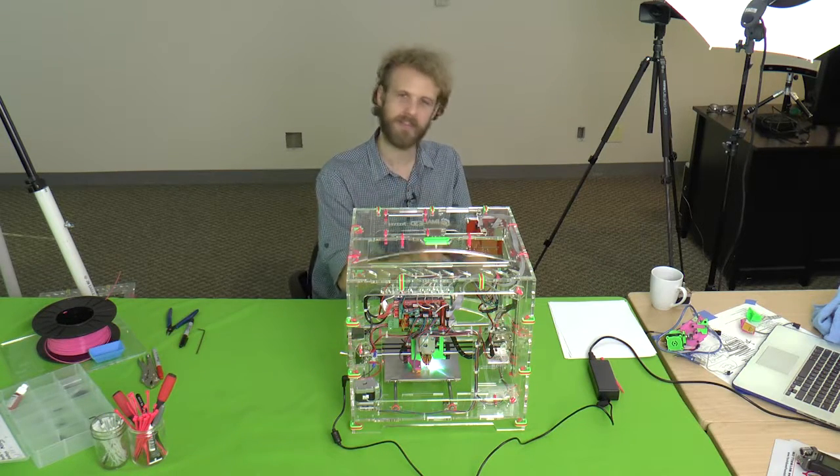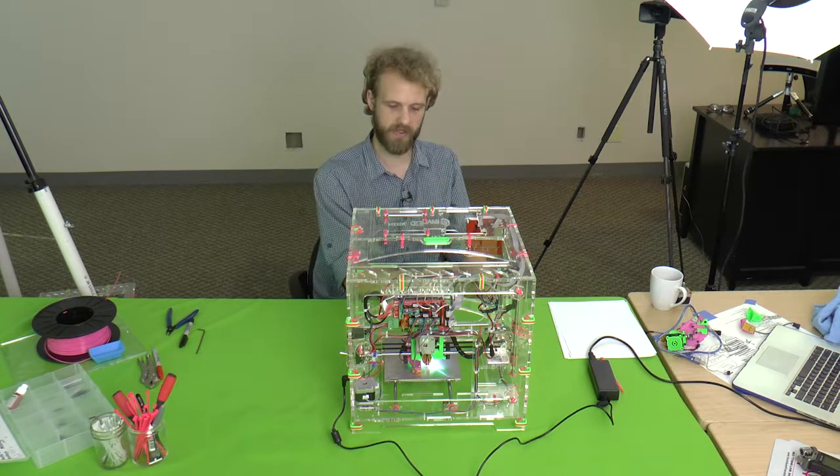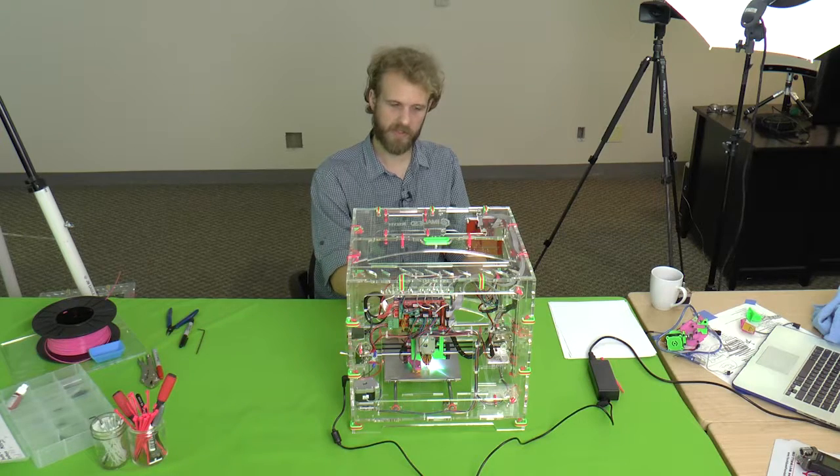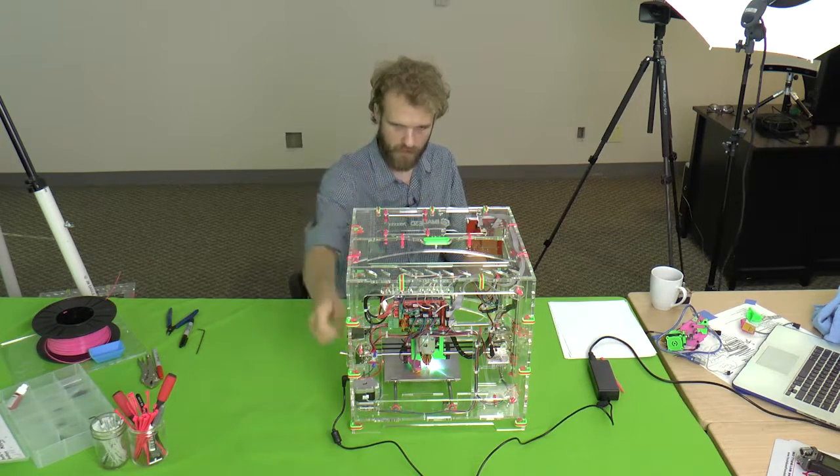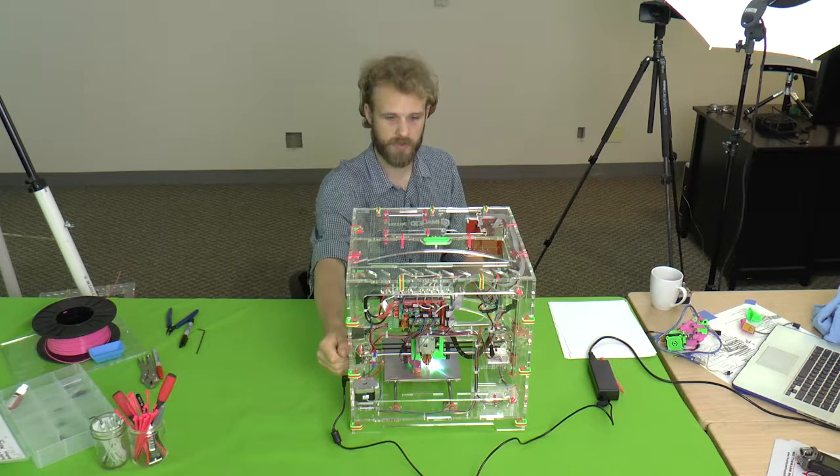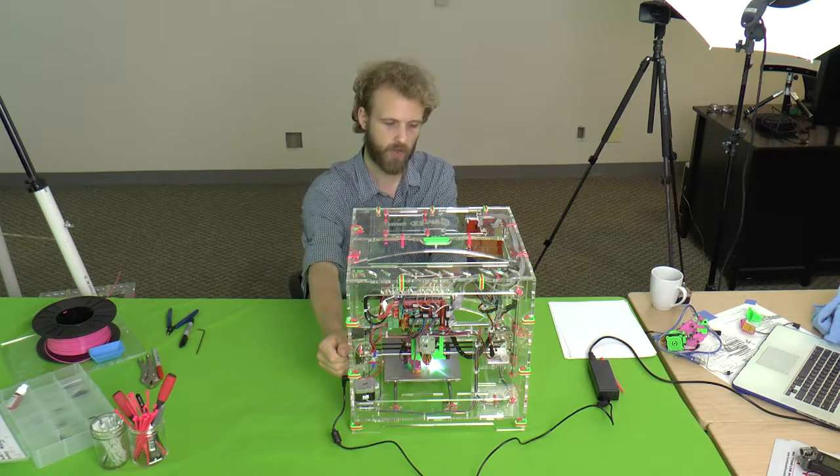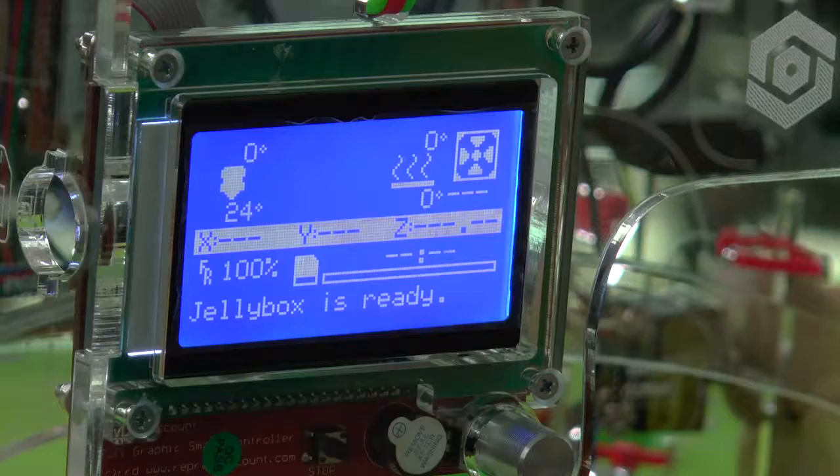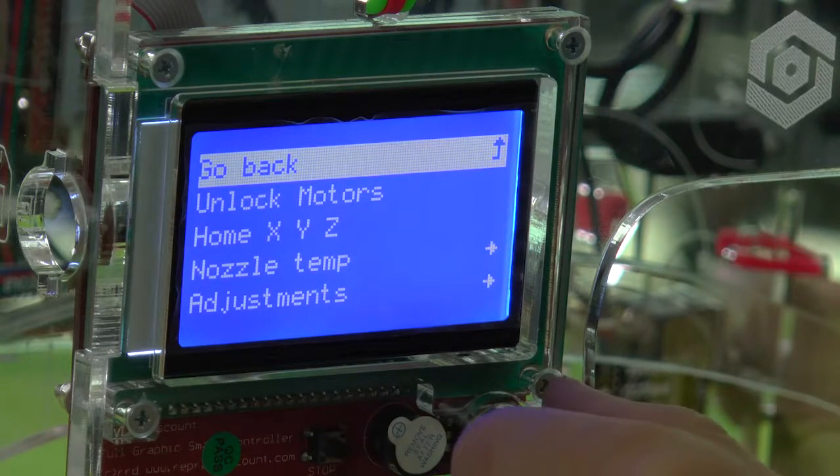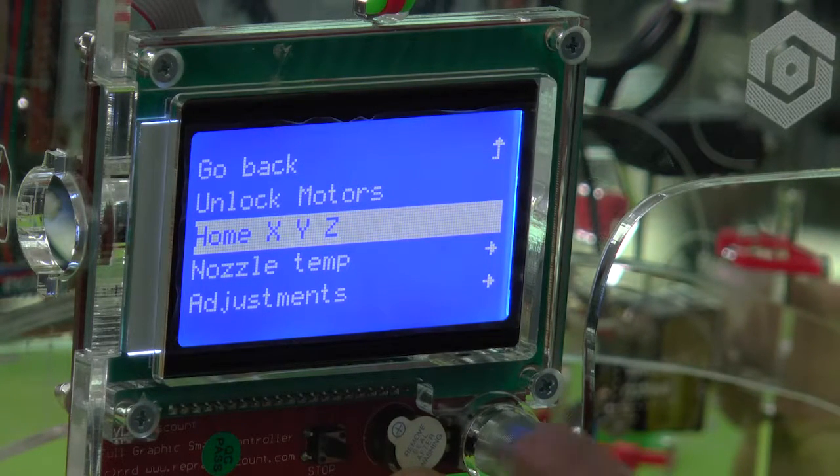Then I'm going to tell it to home X, Y and Z. X first, Y second, Z third. And I'm going to be ready to turn the printer off if it goes in the wrong direction. It should start moving towards the end stop so it can hit it. So let's do that. Press once and there's home X, Y and Z.